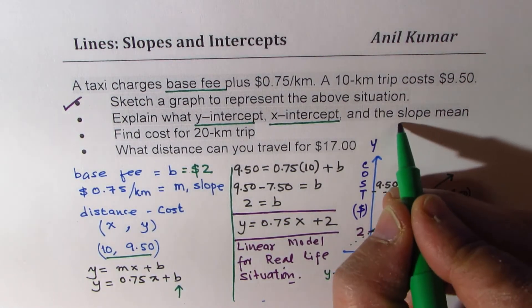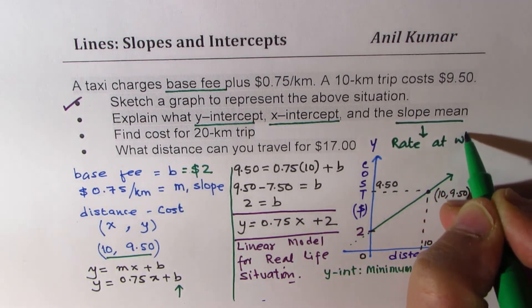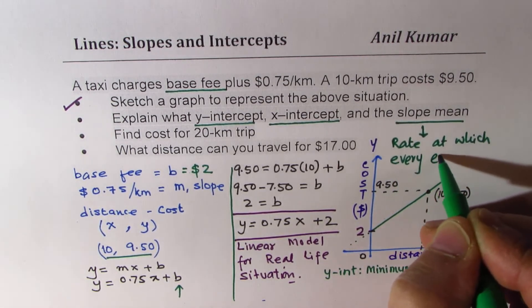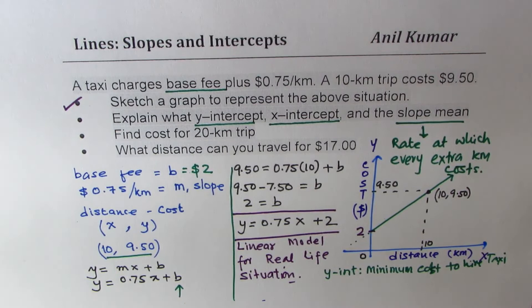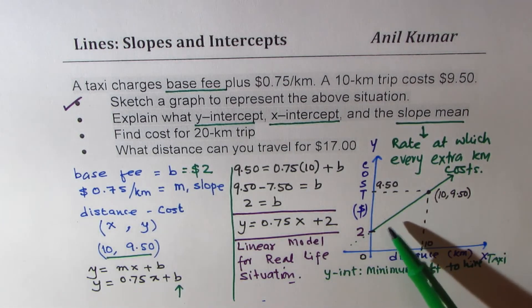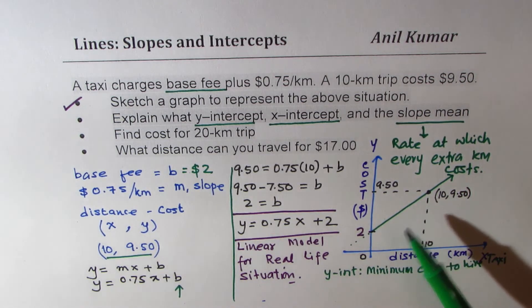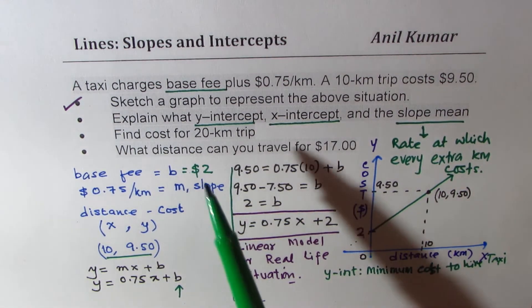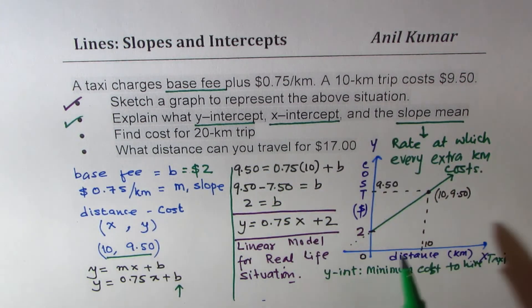Now, the slope. Slope is the rate. Slope means the rate at which every extra kilometer costs. So every kilometer after you start your journey will cost you $0.75. So the first kilometer cost will be $2.75, next kilometer will be $0.75 more, so $3.50 and so on. So I hope you have understood what is the significance of x-y-intercepts and the slopes. We don't have any x-intercept here since you have to pay an amount which is more than zero to begin with.